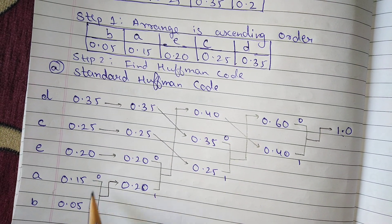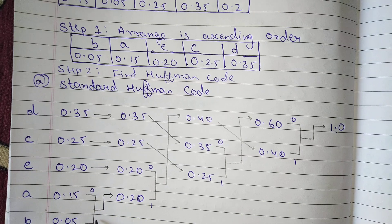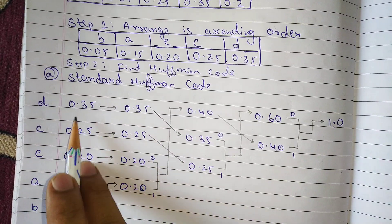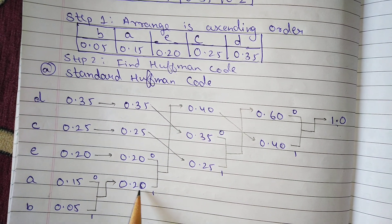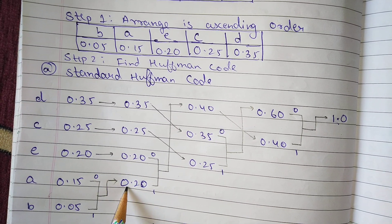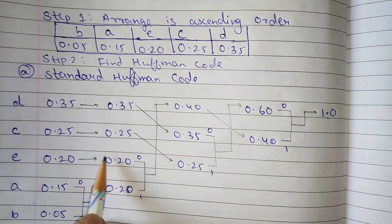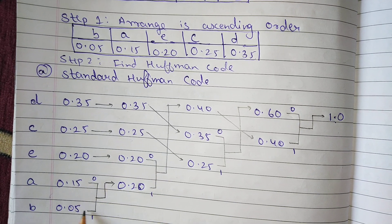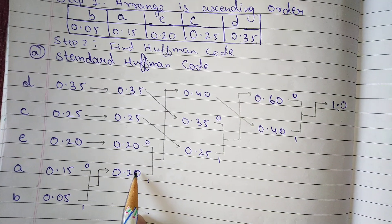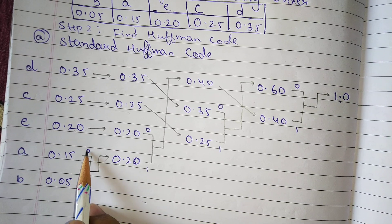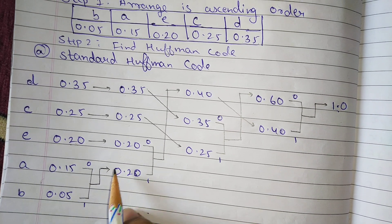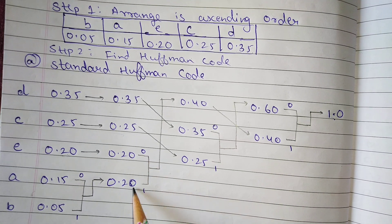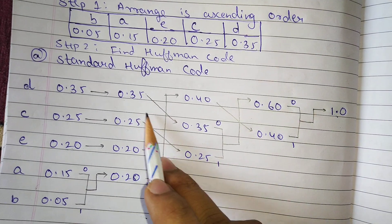For the standard Huffman code, add the two bottom numbers: 0.15 and 0.05 gives 0.20. Since 0.20 already exists in the probabilities, we write it just below that existing value, and the others are copied as-is: 0.35, 0.25, 0.20. This addition result of 0.20 is written here and labeled 0 and 1.